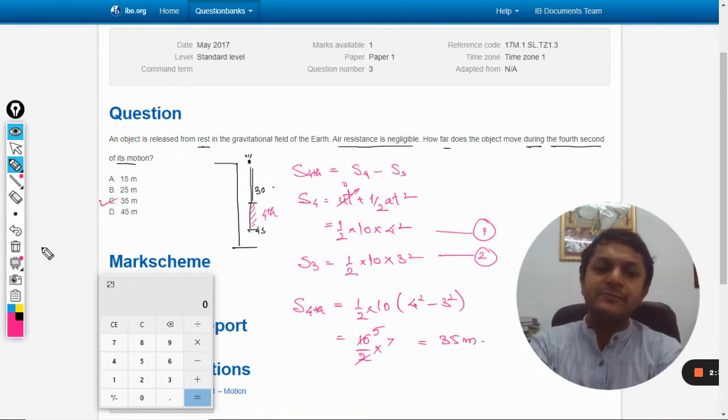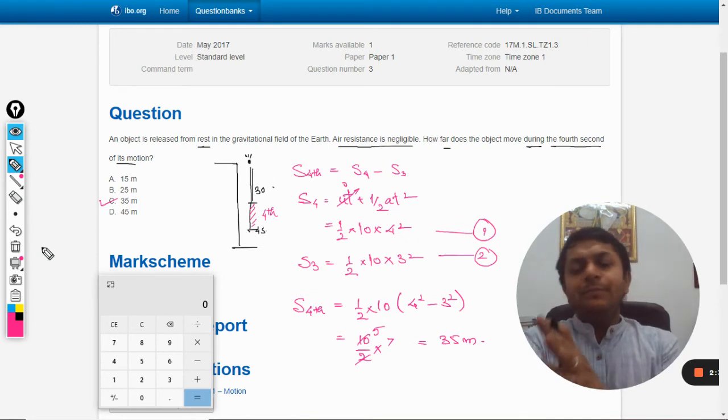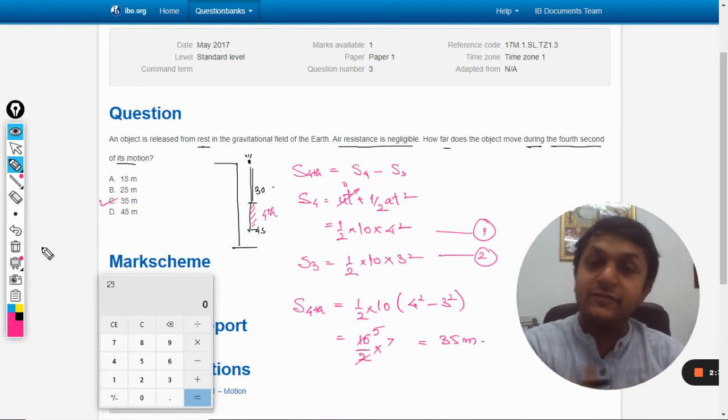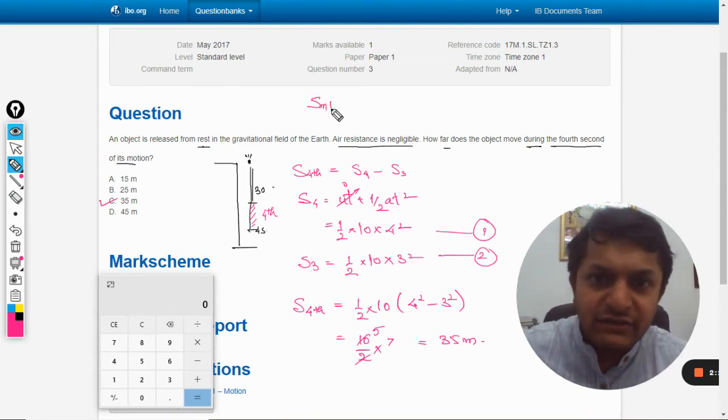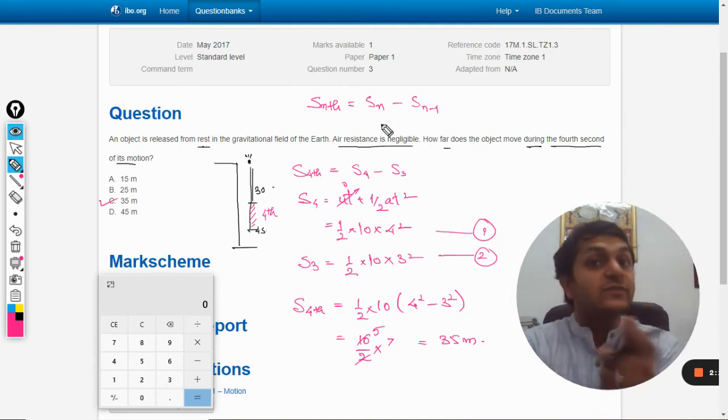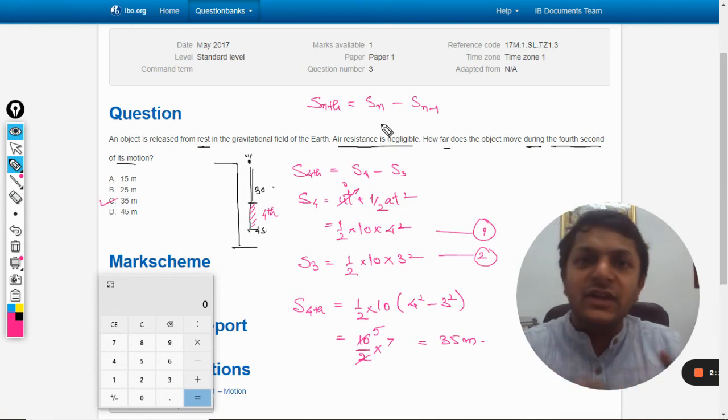This is how we solve this question, but there is another method. There is another formula that we learn here in India, derived from a similar thing by imagining that the distance traveled in the nth second equals distance traveled in n seconds minus the distance traveled in (n-1) seconds.